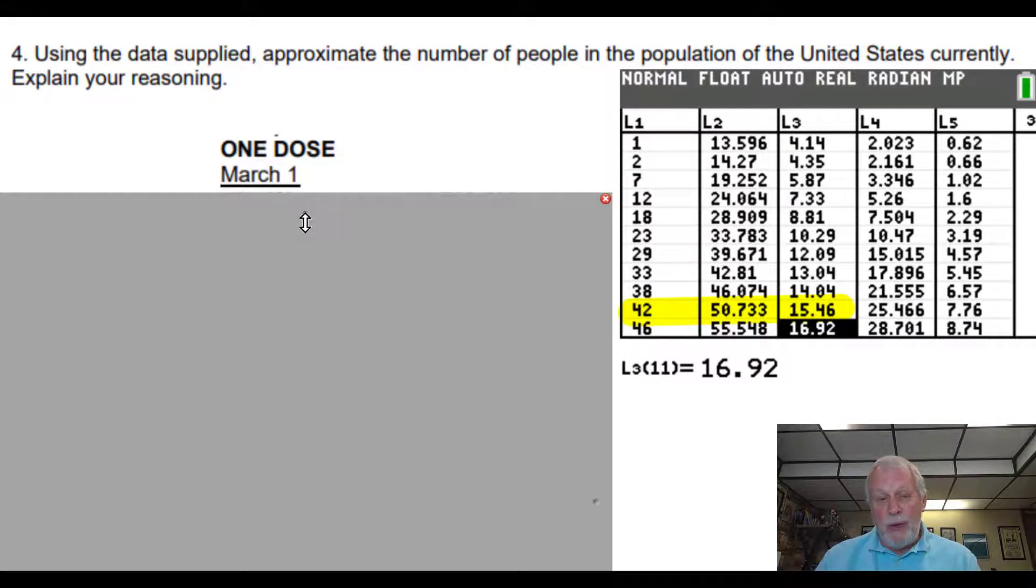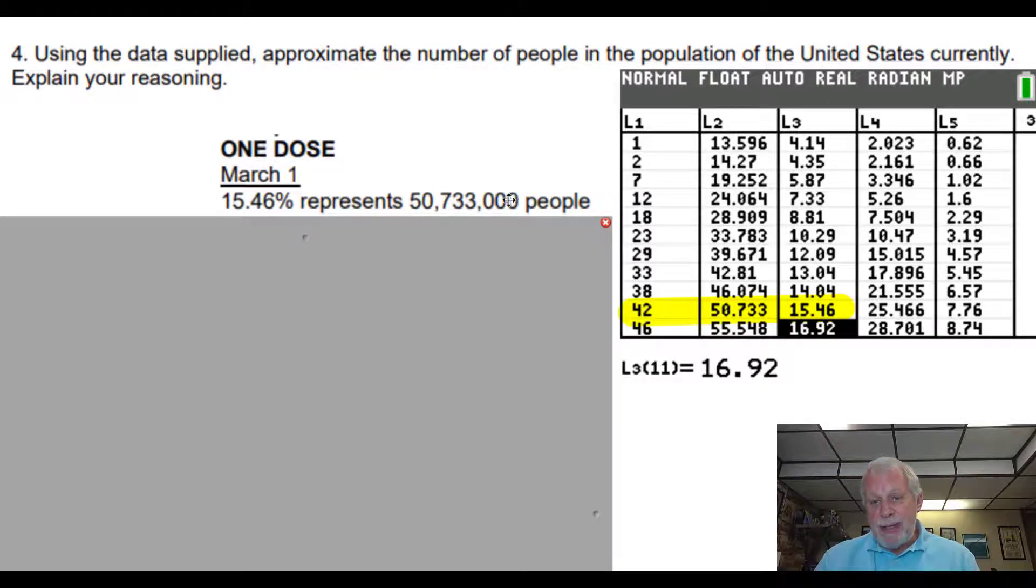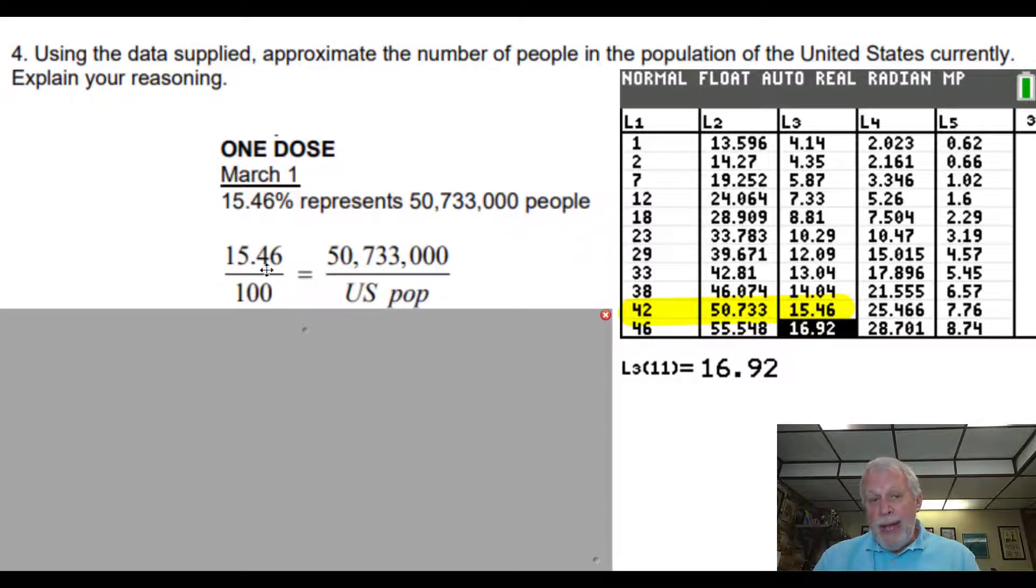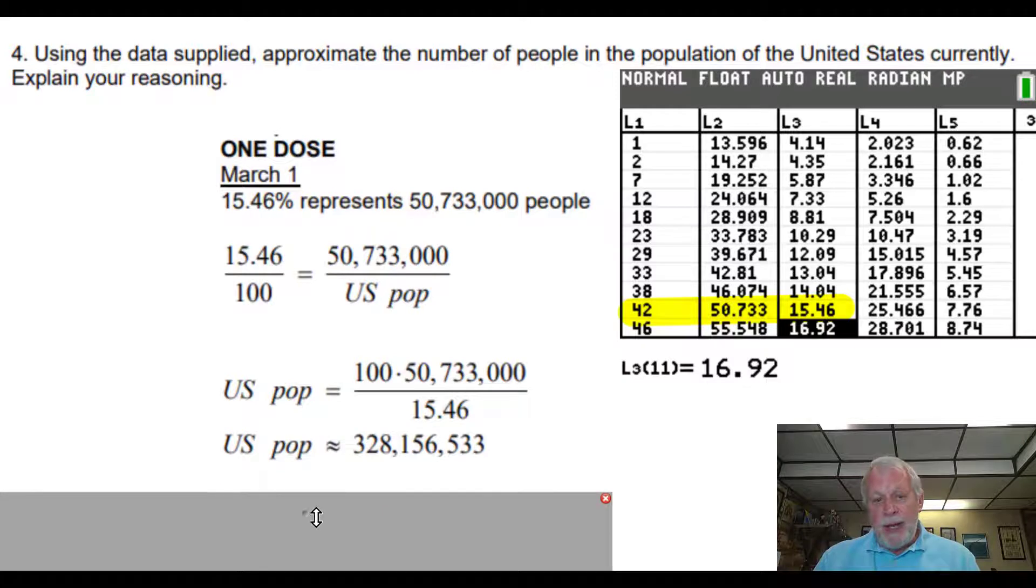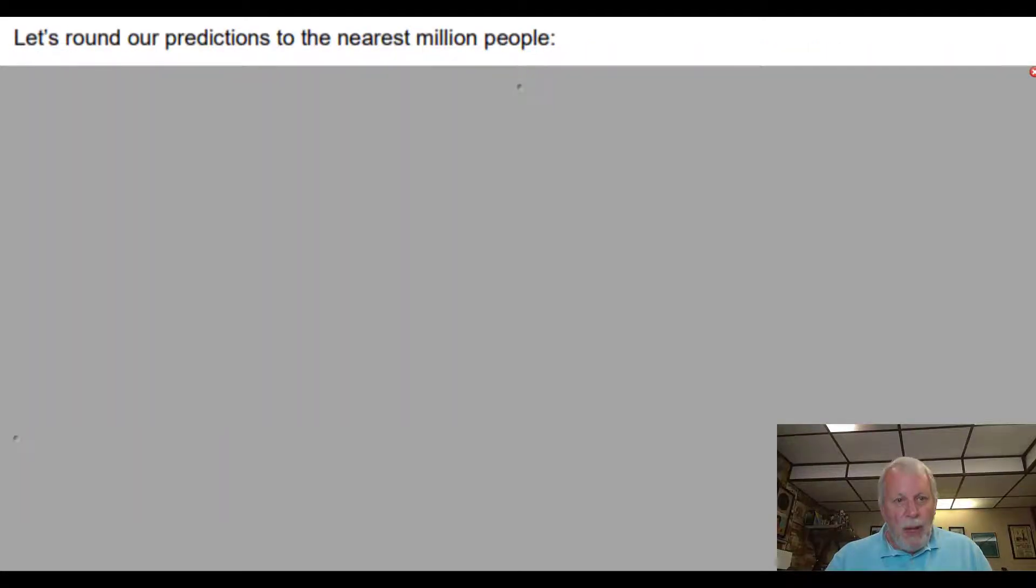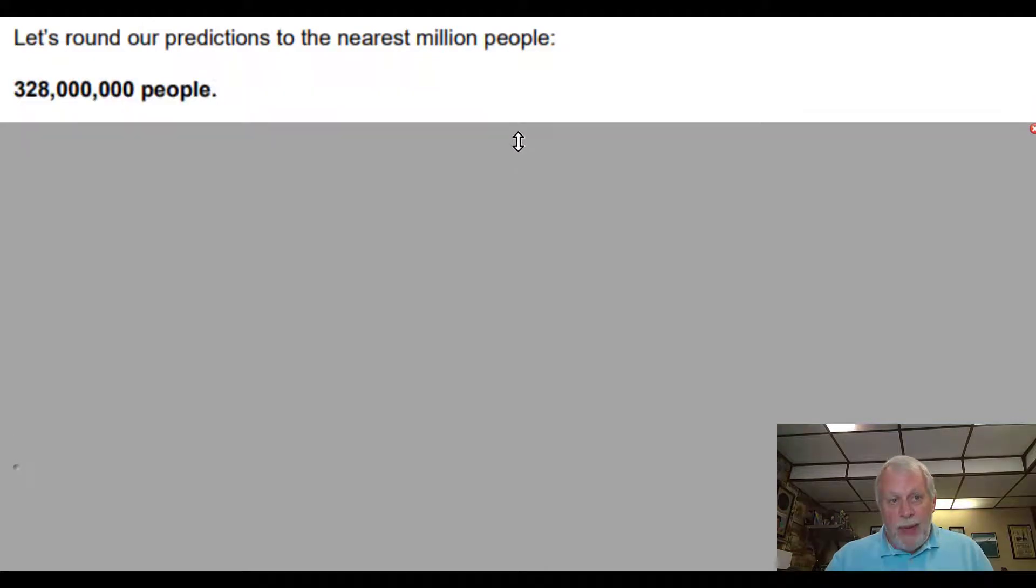All right. So here's how I did it. See what you think. So 15.46 percent represents this many people. And so I decided to use a proportion and said that 15.46 is to 100, because that's what percent means, per 100 is how many people divided by the total number in the U.S. population. So these two ratios should be equal. And so to solve this proportion, we're going to multiply. And I'm going to get that the U.S. population is 100 times this number divided by 15.46. And using a calculator, turns out that it's 328,156,533. Pause to check me on that one. So let's go ahead and round our predictions to the nearest million people. So that to me would be about 328 million people, just to go to the nearest million.